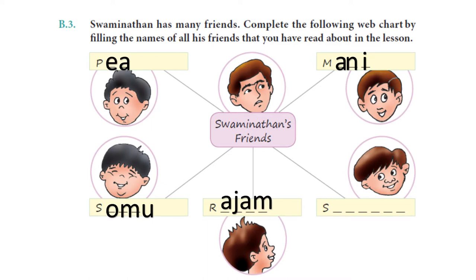Then the next character: this name starts in S and has seven letters. Yes, it is Shankar — S, H, A, N, K, E, R. Shankar.